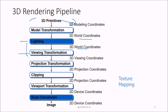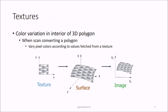Then from world coordinates, it is brought into the 3D viewing coordinate through projection transformation, then clipping into the 2D projection coordinate, then viewport transformation and scan conversion. So we'll see texture mapping today.